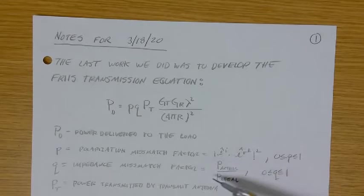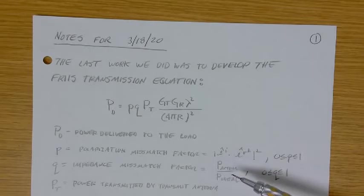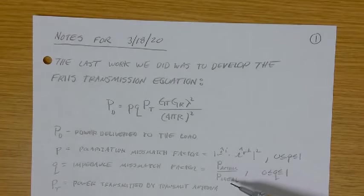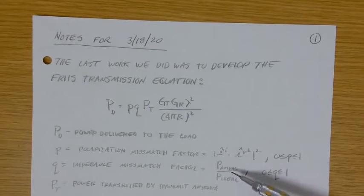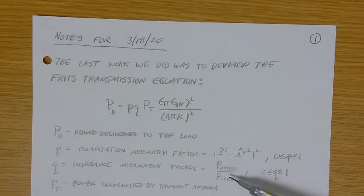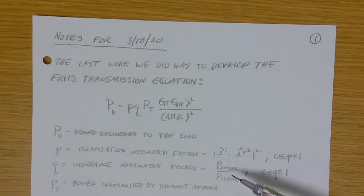And so our polarization mismatch factor, which we've addressed before, is a number between zero and one. And so you just dot the polarization unit vector of your wave radiated by your transmitting antenna to the conjugate of the polarization unit vector associated with the wave radiated by the receiving antenna. Q is the impedance mismatch factor. We're going to discuss that in a little bit greater detail momentarily through an example.